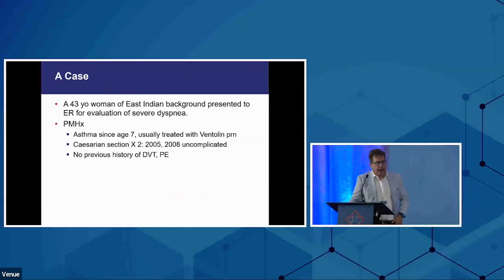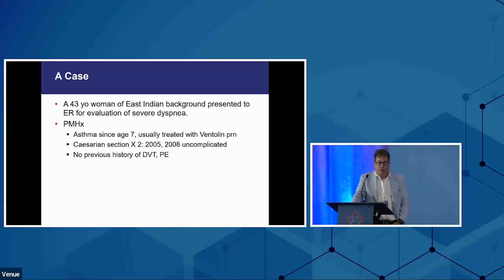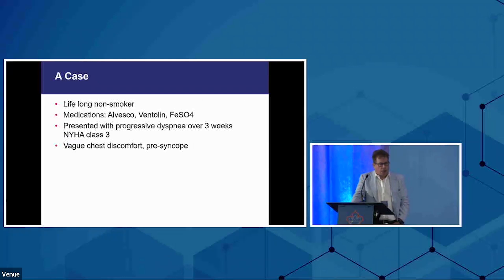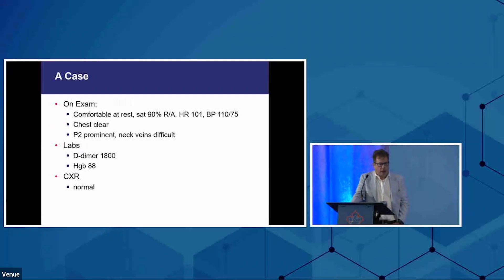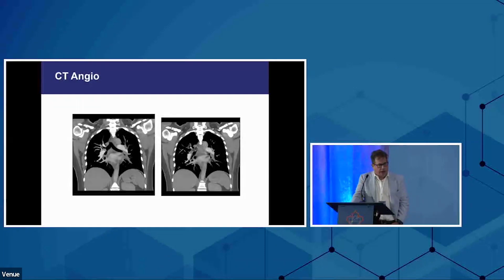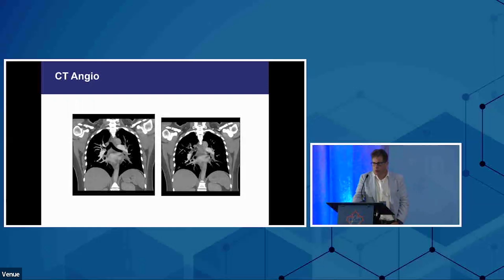I'm going to talk about a young lady we saw a couple of years ago — I like her case because it illustrates some nice points about chronic PE. She was a 43-year-old East Indian woman with mild asthma, a non-smoker, no previous history of venous thromboembolism. She came in with severe class 3 dyspnea, couldn't walk up stairs or do daily activities, and then had chest pressure and almost fainted. In the emergency she was tachycardic and hypoxemic, with evidence of right heart strain, was a little anemic with a high D-dimer and normal chest x-ray. A CT angiogram showed clot sitting in the main pulmonary arteries, and the more you looked, the more clot you would see.